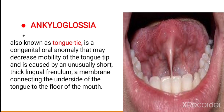Ankyloglossia, also known as tongue tie, is a congenital deformity in which there is decreased mobility of the tip of the tongue because of the lingual frenulum. The lingual frenulum connects the apex of the tongue to the floor of the mouth, which is why free movement of the tongue does not happen, and there is hampering of the free speech of the person.